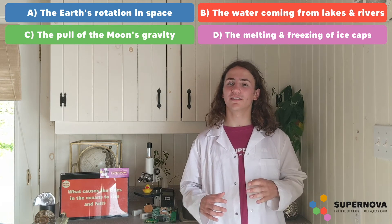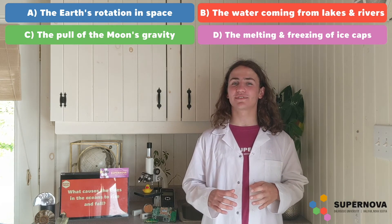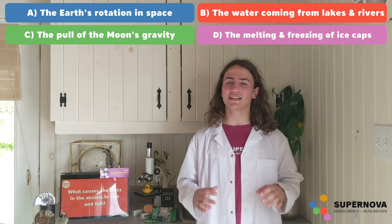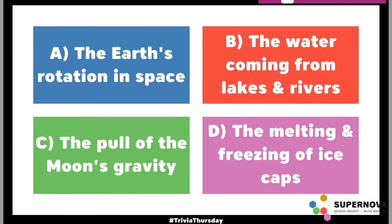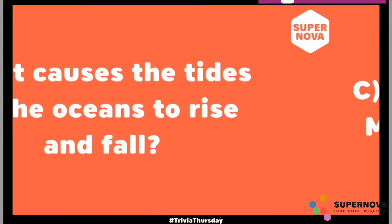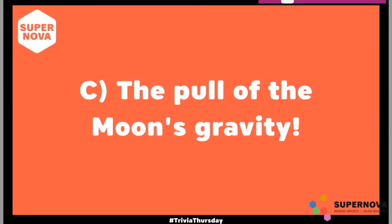Take a moment to think about it, and if you want another moment, feel free to pause the video too. The correct answer is the pull of the moon's gravity. It's the moon that causes the tides in the Halifax harbor and everywhere else on Earth. But how can the moon, way out in space, affect the tides here on Earth? To explain that, we've got to talk a bit about gravity.